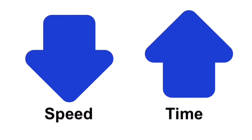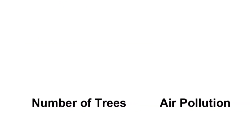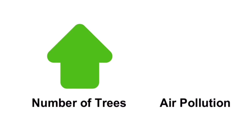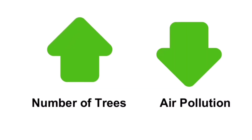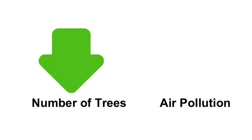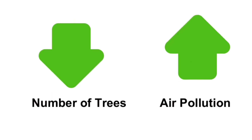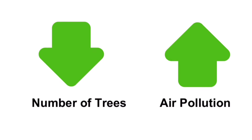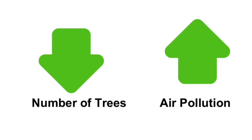Now let's look at another example. The number of trees and air pollution in a given area are inversely proportional to each other, which means that if the area has a greater number of trees, then it has less pollution. On the other hand, if that same area has fewer trees, it will have a higher probability of air pollution. So again, these two are inversely proportional to each other.